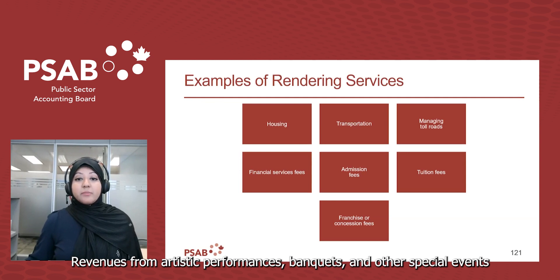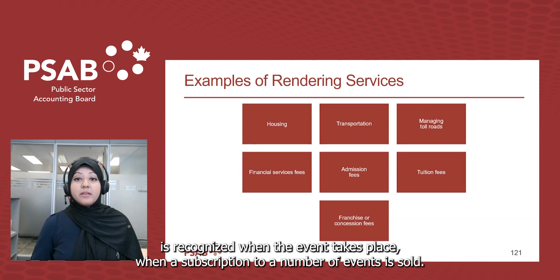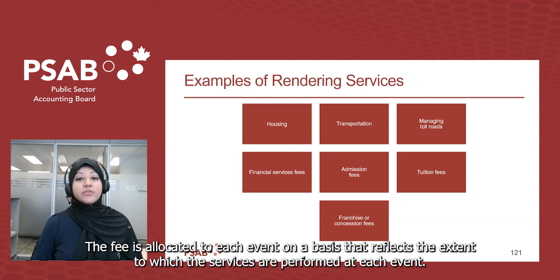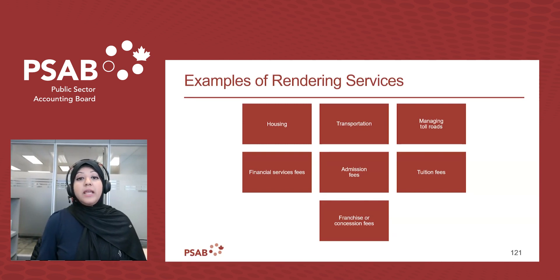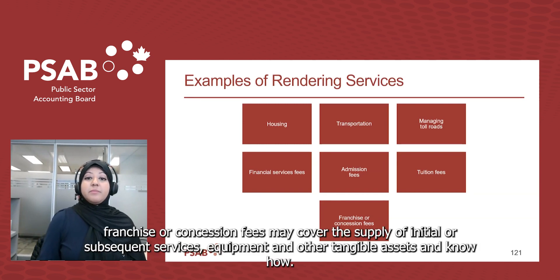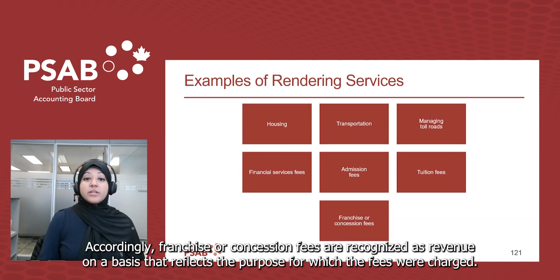It is necessary to distinguish between fees that are an integral part of the effective yield of financial instruments, fees earned as services are provided, and fees earned on the execution of a significant act. Revenue from artistic performances, banquets, and special events is recognized when the event takes place. Subscription fees are allocated to each event based on the extent to which services are performed. Tuition fee revenue is recognized over the period of instruction. Franchise or concession fees are recognized on a basis that reflects the purpose for which the fees were charged.